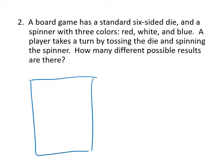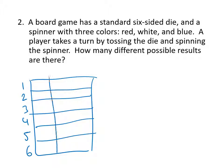So in this table, in one direction, I'm going to represent the results of rolling the die: one, two, three, four, five, six. And then across the top of the table, I'm going to represent the result of the spinner, which is red, white, and blue.